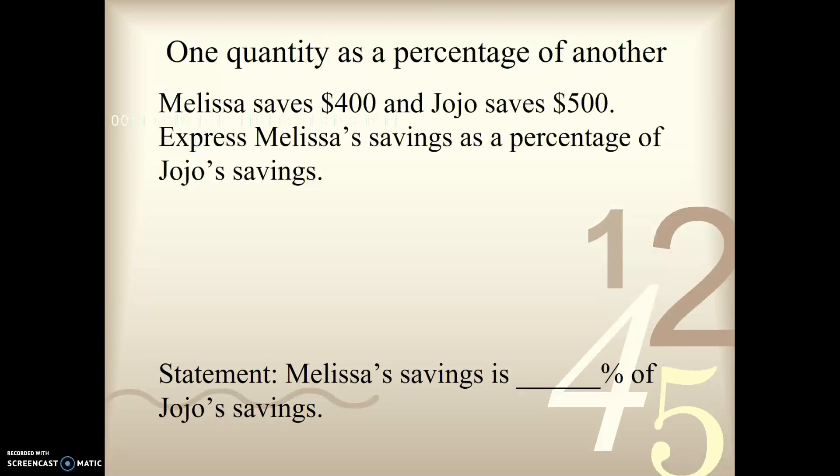Let's try another one. Melissa saves $400, and JoJo saves $500. Express Melissa's savings as a percentage of JoJo's savings. So Melissa is my as, and JoJo is of. So we're going to write Melissa over JoJo. And let's see, Melissa had $400, and JoJo has $500. Same numbers as the last problem, only things are flip-flopped this time, aren't they?